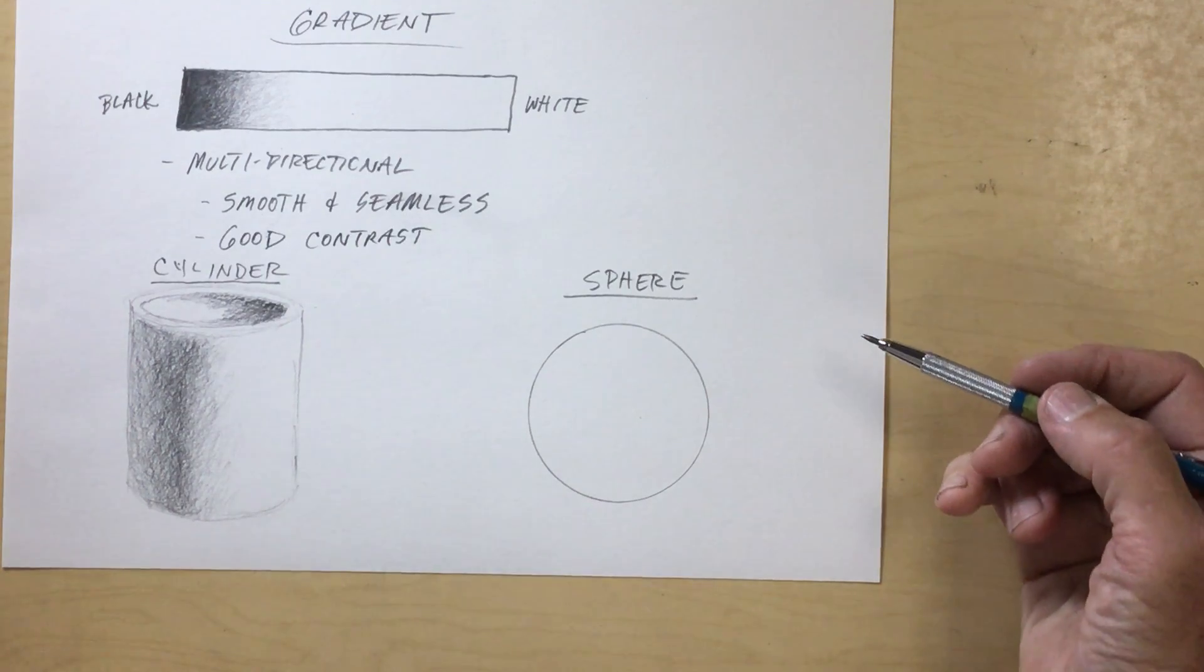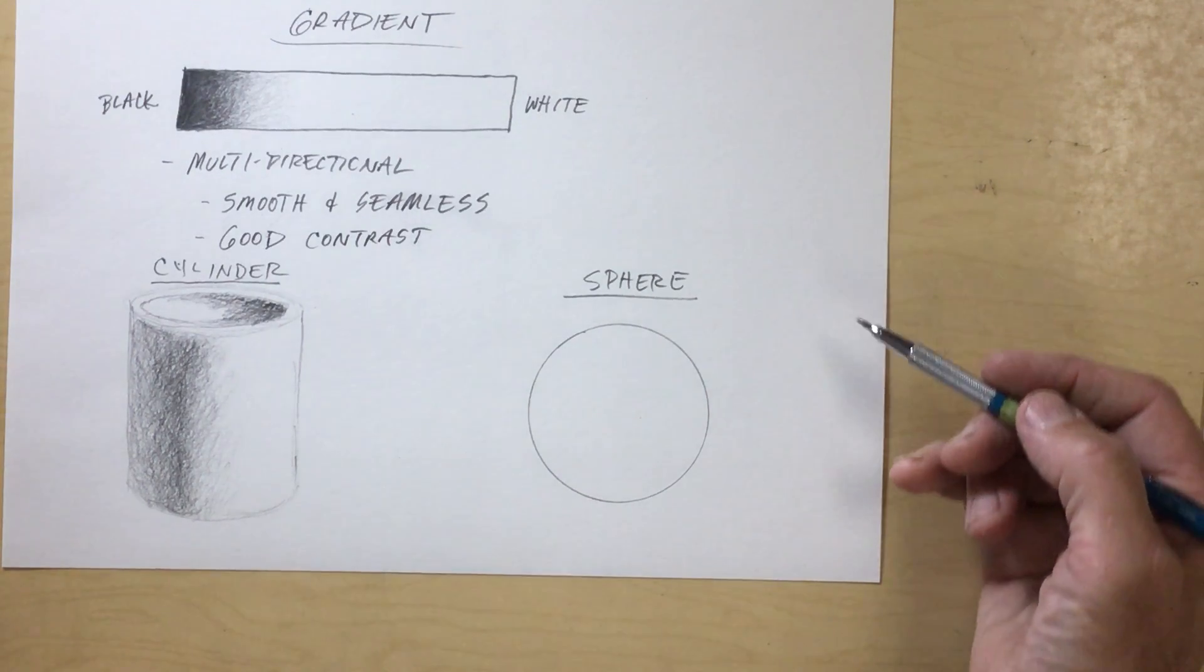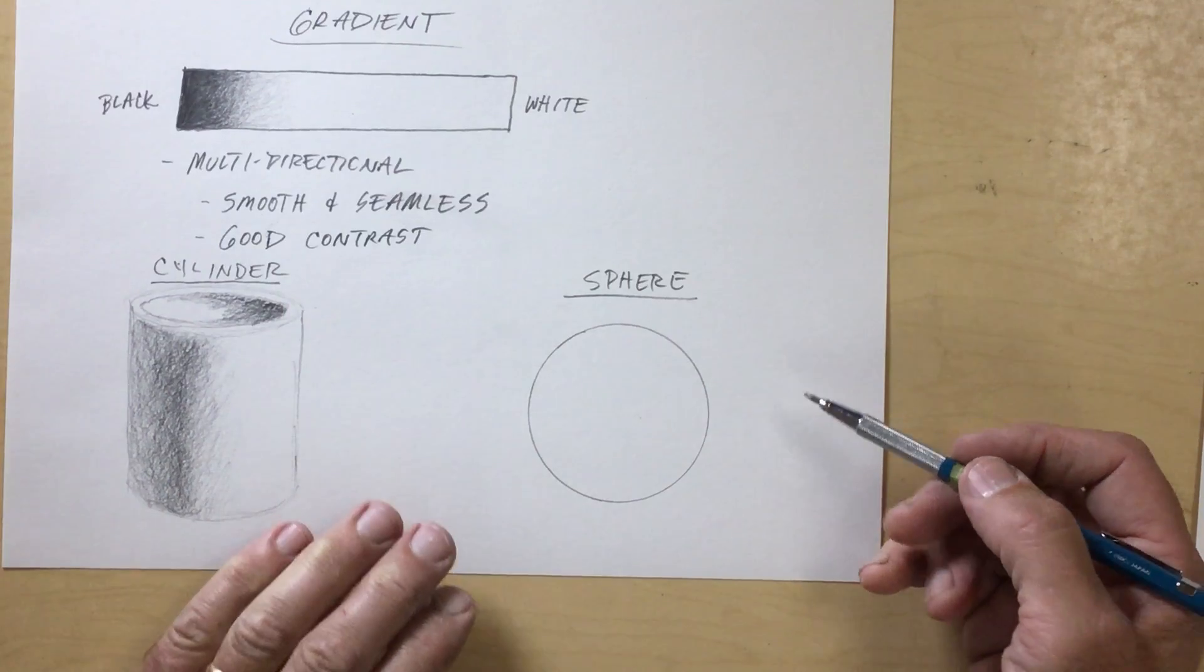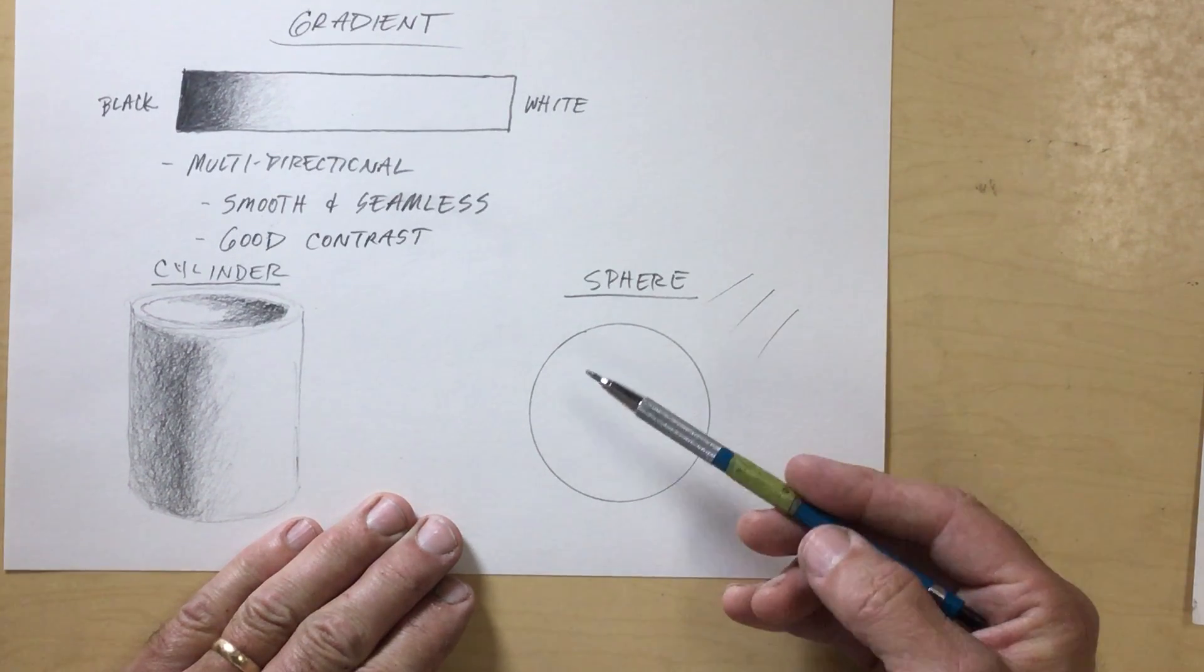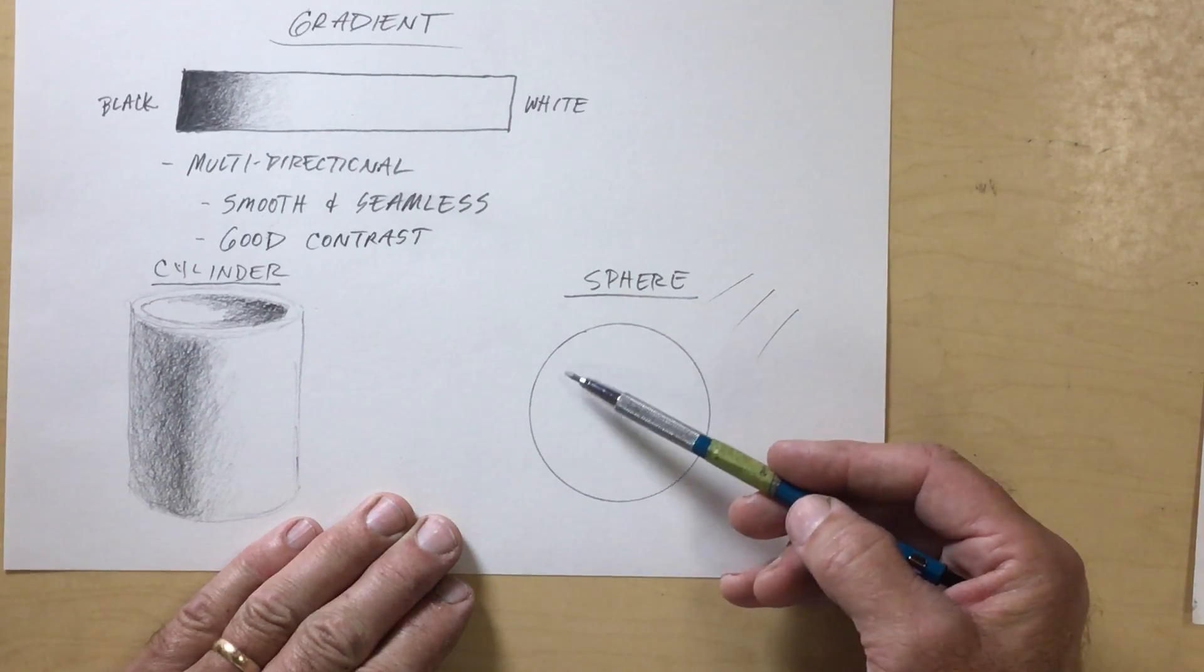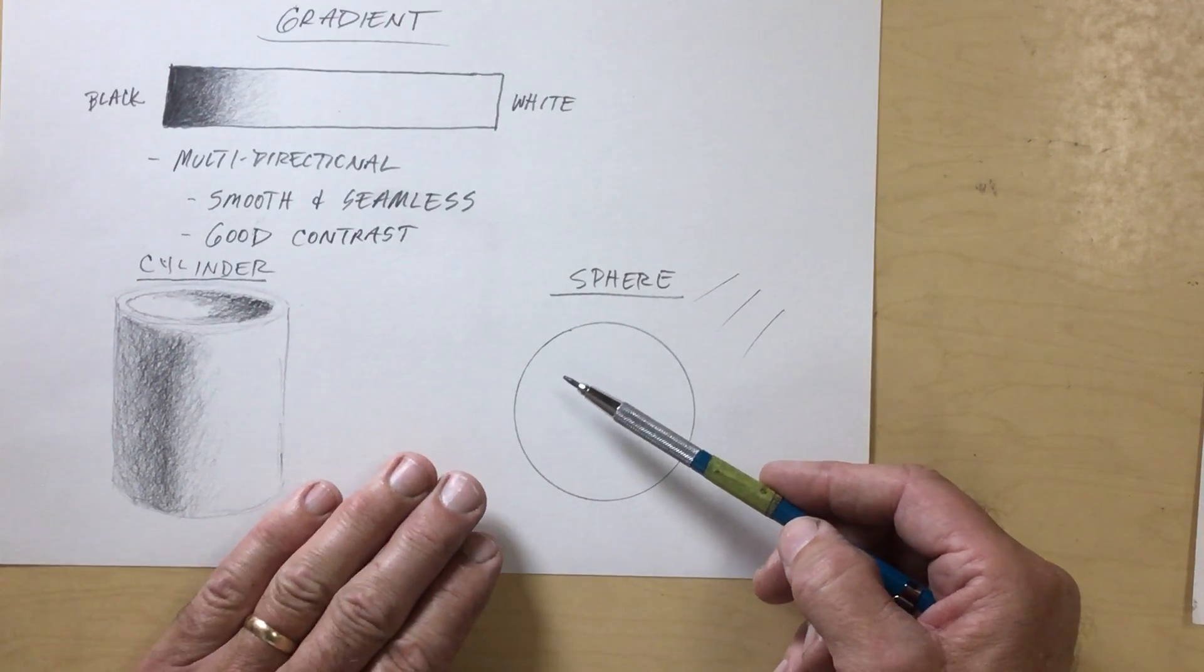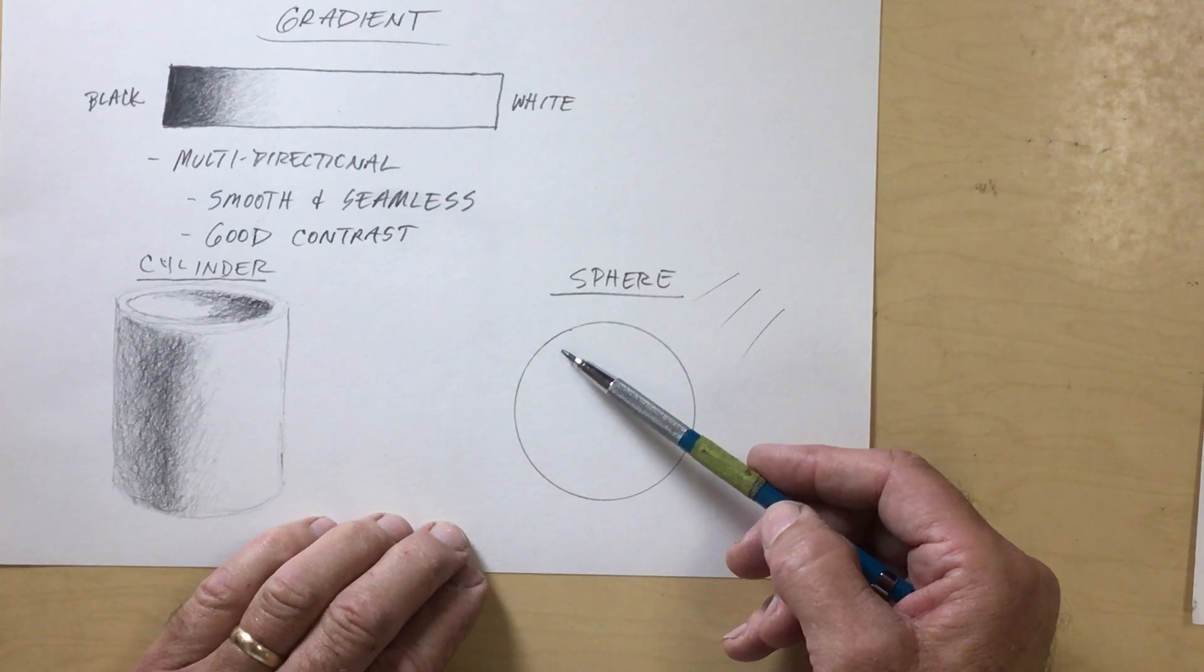So again, my light source is going to come here from the upper right, so the upper right is going to be my light side. The lower left is going to be my shadow side.